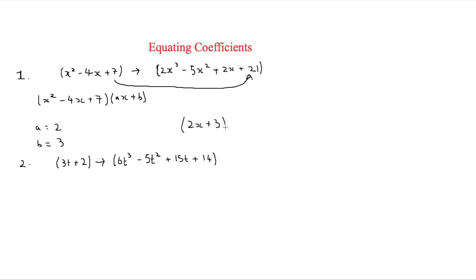So that's a very simple example of how you can get from one thing to another thing fairly easier without having to divide it. So the next one to look at is slightly harder because we're adding a c in here. And this is 3t plus 2 goes to 6t cubed minus 5t squared plus 15t plus 14.